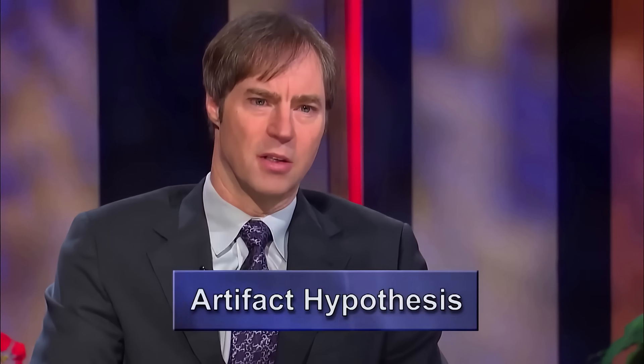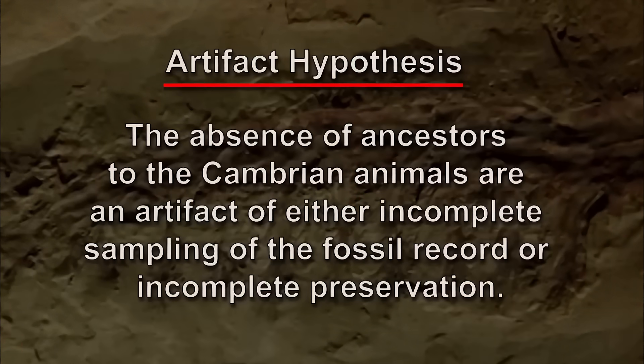Well, as Dr. Chen alluded to, there are many paleontologists now who are acknowledging that the Cambrian explosion is a real event and that it does pose a challenge to the textbook theory of evolution called Neo-Darwinism. But there are still defenders of Neo-Darwinism, and what they have typically proposed to explain away the absence of these ancestral forms is something called the artifact hypothesis. The artifact hypothesis is a modified version of the idea Darwin put forward in the 19th century — that we're not seeing the ancestral forms either because we haven't looked hard enough, or because these ancestral forms were not preserved. The missing ancestral animals are missing as an artifact of either incomplete sampling of the fossil record or incomplete preservation.